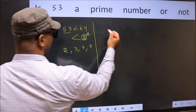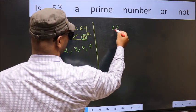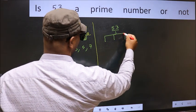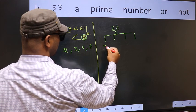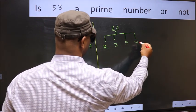Now, for the given number, we should check divisibility by these numbers. That is 2, 3, 5, and 7.